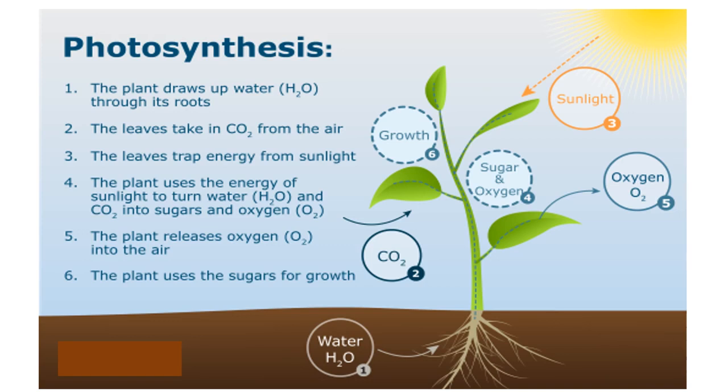Third, the leaves trap energy from sunlight, represented by the orange circle, point number 3. The plant uses the energy of sunlight to turn water and carbon dioxide into sugars and oxygen, denoted by point number 4. This sugar is basically in the form of glucose.